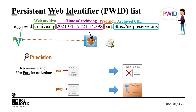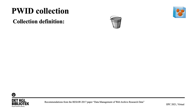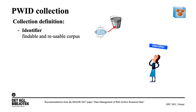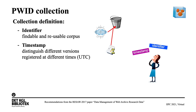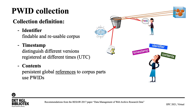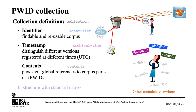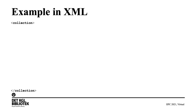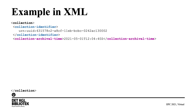So if we use PUDs with precision parts, we have a good alternative. To make the actual PUD collection or PUD list, we use the recommendation from the RESO 2017 paper 'Data Management of Web Archive Research Data.' This consists of the identifier for the collection, a timestamp for when the collection was actually archived, and the contents, where each part of the contents is a persistent web identifier. All other metadata has to be registered elsewhere pointing to this definition. Each part of the definition has a standard name, and the final result is in XML with the collection identifier, the time of making the XML, and all the generated PUDs.